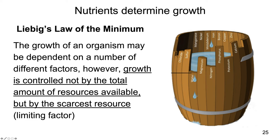So if you want to increase the growth, you've got to, in this case, increase the water. And as it turns out, if you look at the major nutrients that are limiting factors for most plants, it's nitrogen and phosphorus that are often the limiting nutrients.